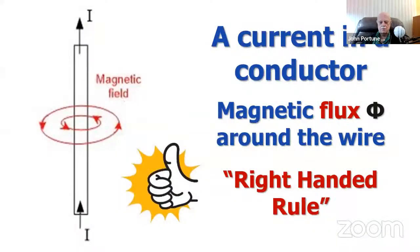We all know, if we studied electricity at all, that current in a wire — the I, the current — produces a magnetic field. It circulates cylindrically around the wire, just as we see there. And we all probably know the famous right-hand rule: point your thumb in the direction of the current, and your fingers show you where the magnetic field is. It's also symbolized in physics with the Greek letter phi, which is the symbol of magnetic flux.